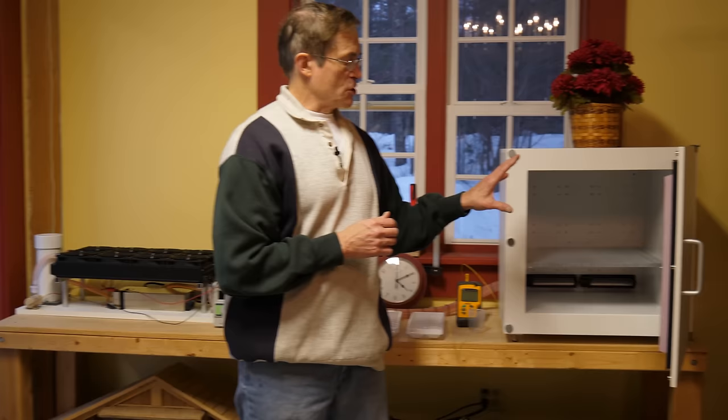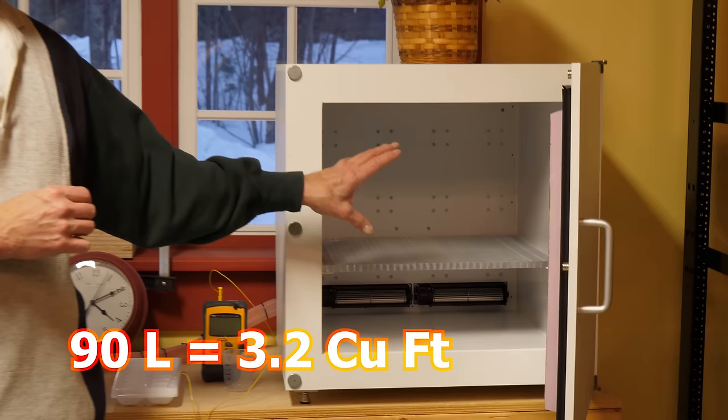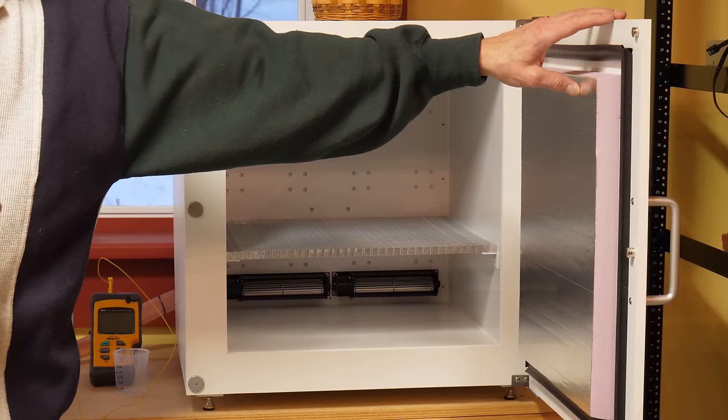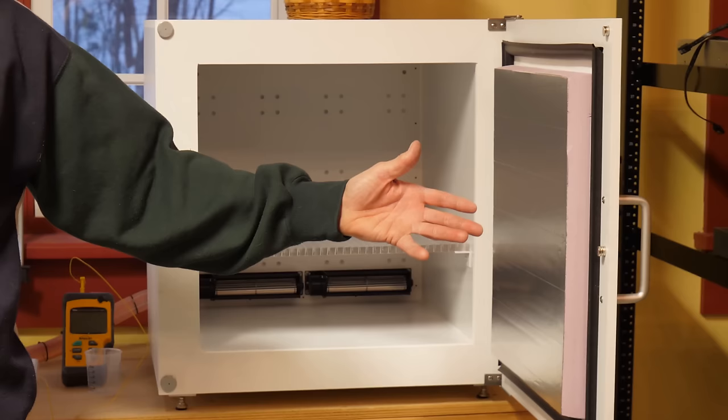First of all, this is substantially larger. It has an internal volume of about 90 liters. Rather than the clear glass door, which is convenient for the refrigerator so you can see what's inside, we wanted better insulating properties. So we went with a solid door with more insulation because we're going to be running at lower temperatures.